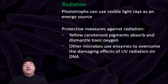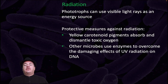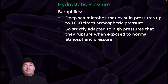Radiation can also affect microbial growth. Phototrophs use visible light rays as an energy source. Protective measures against radiation include yellow carotenoid pigments, which absorb and dismantle toxic oxygen, and other microbes use enzymes to overcome the damaging effects of UV radiation on DNA. Hydrostatic pressure also affects microbial growth — barophiles are deep-sea microbes that exist at pressures up to 1,000 times atmospheric pressure.